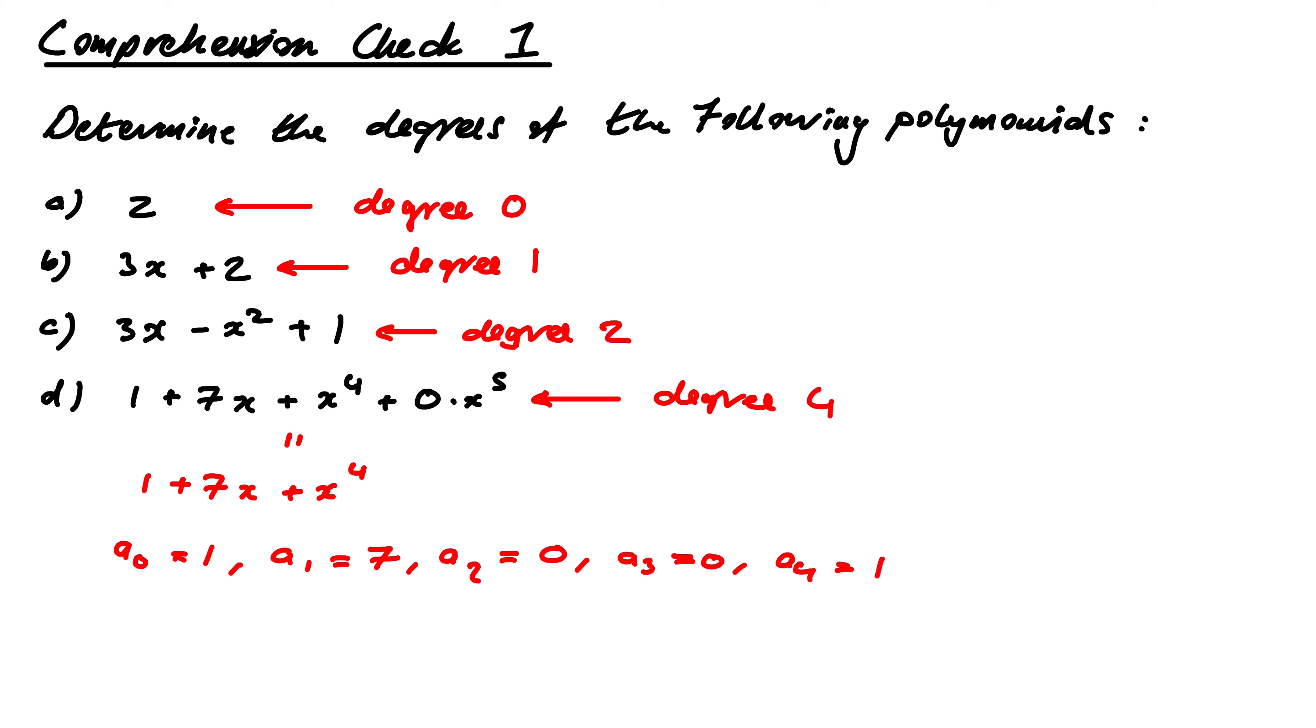And then from that point on, we either just say it's degree 4, so there are no coefficients, or we could say the coefficients are all 0 past that point.